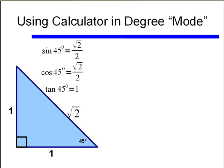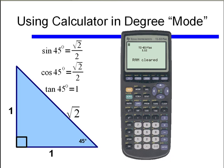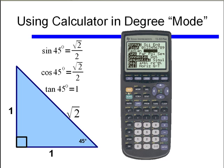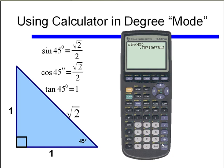Let's go back to our 45-45-90 triangle. We know that sine of 45 degrees is equal to square root of 2 over 2. Let's see if we can get our calculator to give us the same answer. Here's our TI-83+. Before I do anything, I'm going to click on the MODE button to make sure the calculator is assuming degrees and not radians. You can see that when you first start up your calculator, it generally starts in radian mode, so we scroll down and switch to degree and hit ENTER. Now I'll click the sine button and type in 45, close the parentheses, and hit ENTER. We get 0.7071.